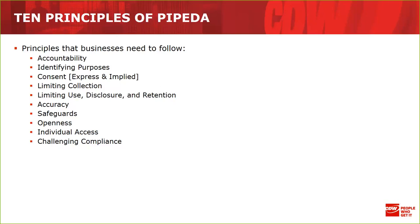Ninth: Individual access — upon request, an individual must be informed of the existence, use, and disclosure of their information and be given access to it. That doesn't mean access to your database; it means you should be able to produce a record of that individual who asks for it through the proper legal manner. An individual should also be able to challenge the accuracy and completeness of the information and have it amended, making it your obligation as custodian to keep it as accurate as possible.